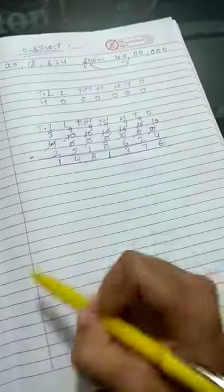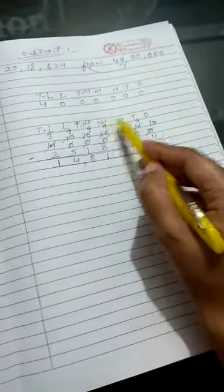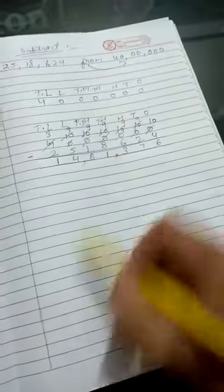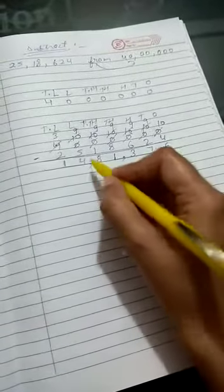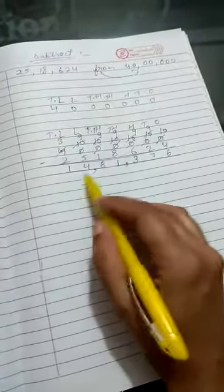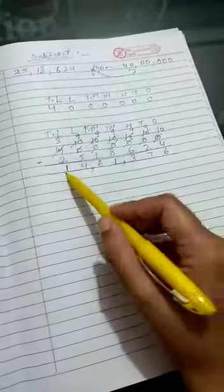So you will get a comma here. So you will take when you have to do addition and subtraction and you need to leave the comma period wise. Now if we will read this number, how we will read this number? This is 1,481,376. Likewise all the questions should be done.